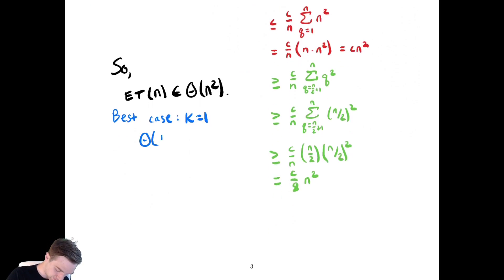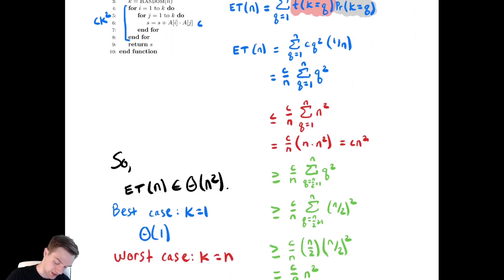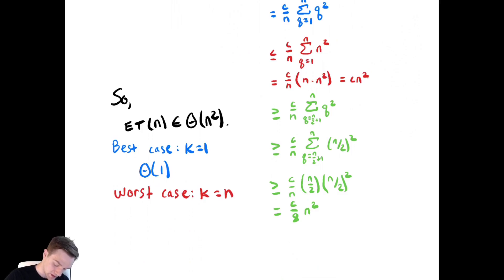The worst case is when k is equal to n. And we already know what the run time looks like for different values of k. It's c times k squared. So it would be cn squared or theta of n squared. So this is another example where our expected run time happened to be the same as the worst case run time.